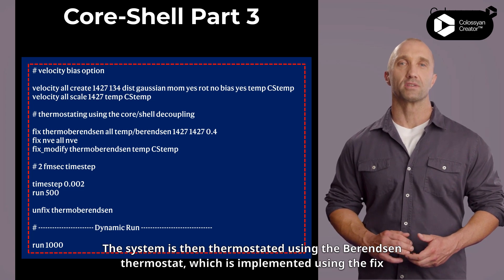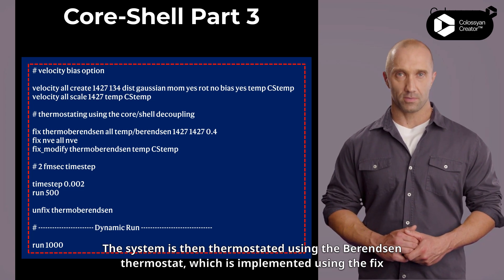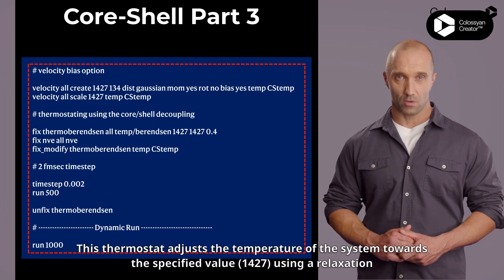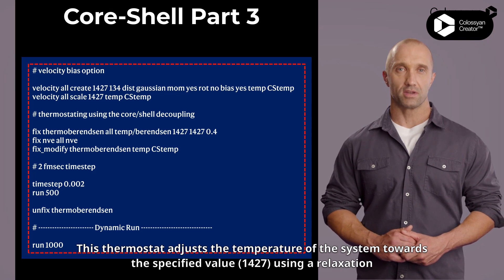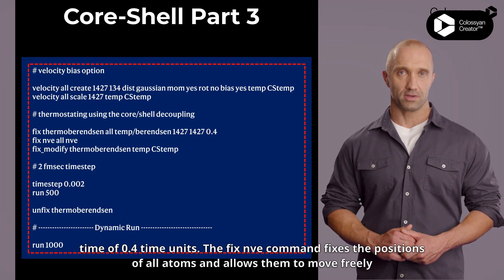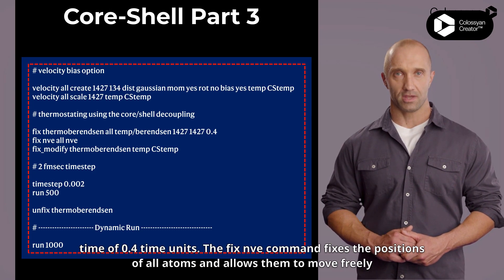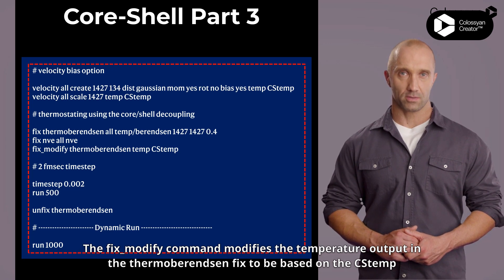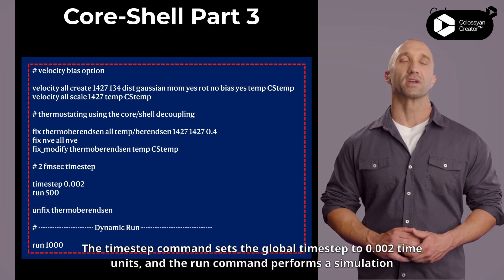The system is then thermostated using the Berendsen thermostat, which is implemented using the fix thermo Berendsen command. This thermostat adjusts the temperature of the system towards the specified value, 1427, using a relaxation time of 0.4 time units. The fix nve command fixes the positions of all atoms and allows them to move freely based on the forces acting on them. The fix_modify command modifies the temperature output in the thermo Berendsen fix to be based on the c_temp value calculated earlier.